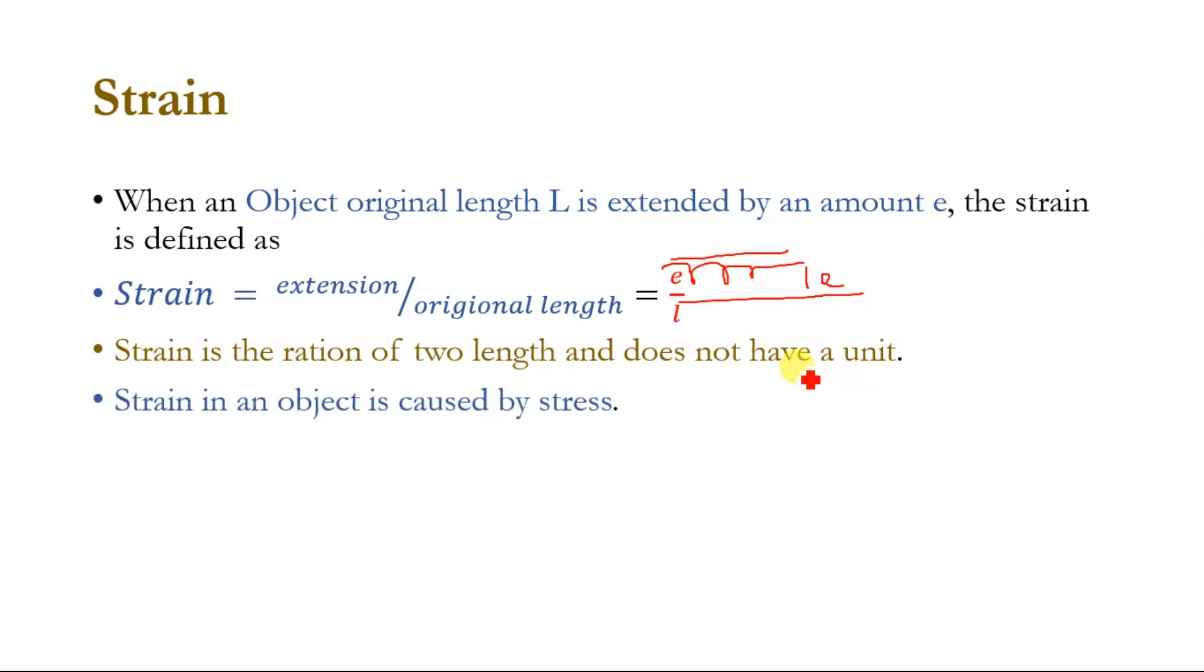Strain in an object is caused by stress. For example, if we applied more stress to this object, it will produce more strain. If we applied more force on the area, it will extend or compress, and both will produce strain in that object.